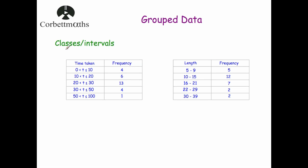The first term you might encounter when dealing with grouped data is 'class', 'interval', or 'group'. In the first table, the first class is the first row beneath the headers: 0 to 10 — that's the first class or group. The next class is 10 to 20, then 20 to 30, and so on. Likewise for the second table: the first class is 5 to 9, the next is 10 to 15, and so on. Each one of these is a class or an interval.